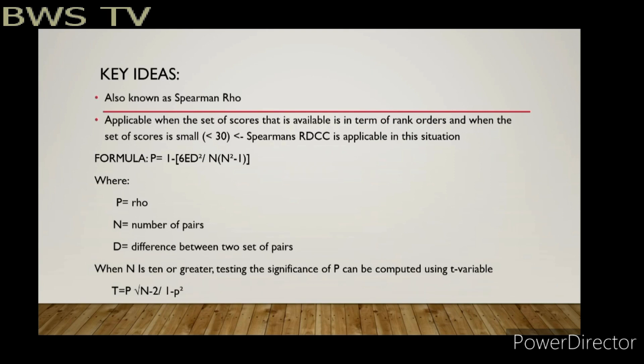In the formula, Rho (P) is our Greek letter symbol. N is the number of pairs, or number of variables. D is the difference between the two sets of pairs. In cases where N is 10 or greater, once we solve for Rho, we use the t-test formula: t equals Rho times the square root of (N minus 2), all over (1 minus Rho squared).